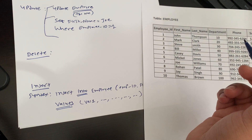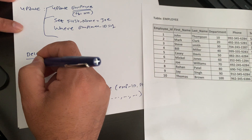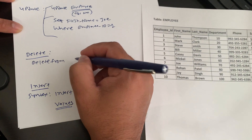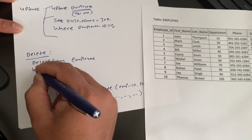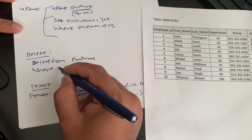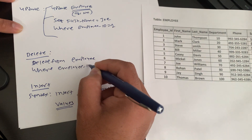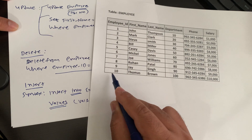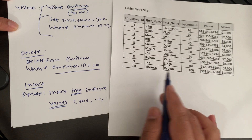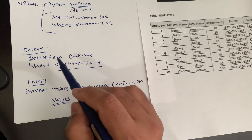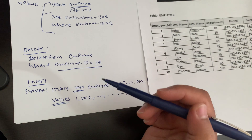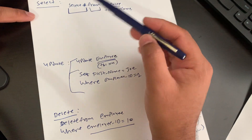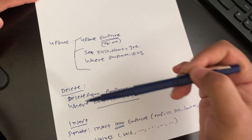Now let's look at DELETE. DELETE is used to delete records from a table or view. The syntax is: DELETE FROM employee WHERE employee_ID = 10. This deletes the record for employee 10. This covers all the DML commands — SELECT, UPDATE, DELETE, and INSERT. Thank you.